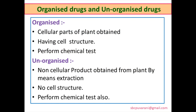Drugs are classified into organized and unorganized. Organized means the crude drugs are obtained directly from plants. Unorganized means the product obtained from plants by means of extraction, isolation, and different techniques.